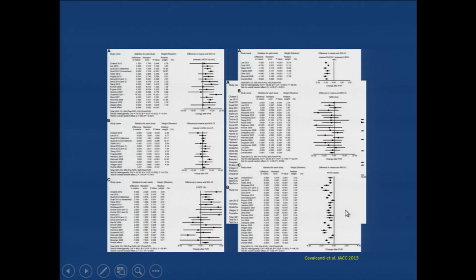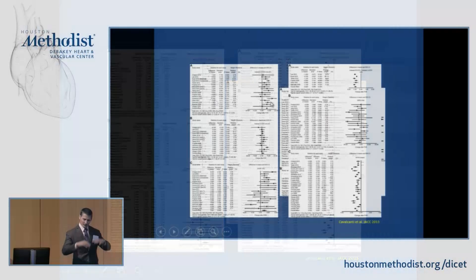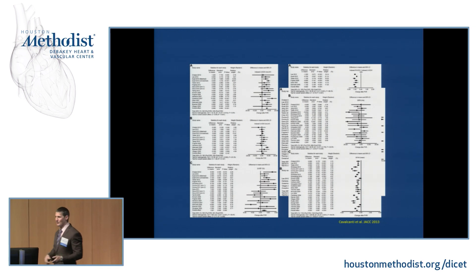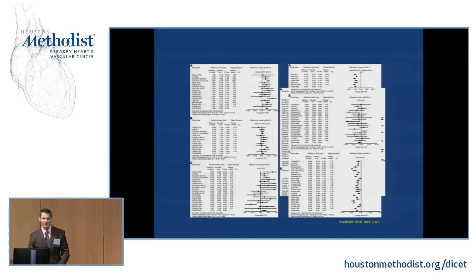Left ventricular volumes actually increase after pulmonary valve replacement. That's because of the phenomenon where the right ventricle is so large within the relatively confined pericardium that it crowds out the LV. After PVR, you get an increase in the size of the left ventricle — left ventricular end-systolic and end-diastolic volumes increase. NYHA functional class improves, so patients feel better.